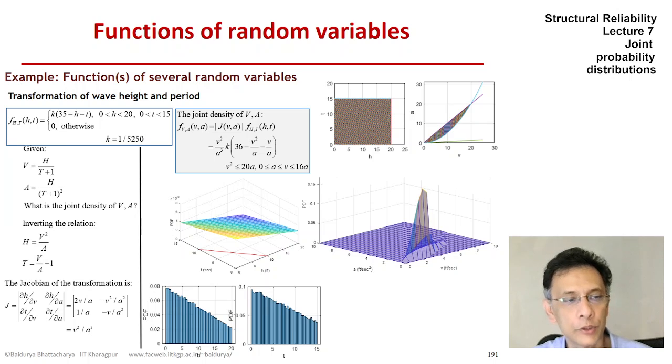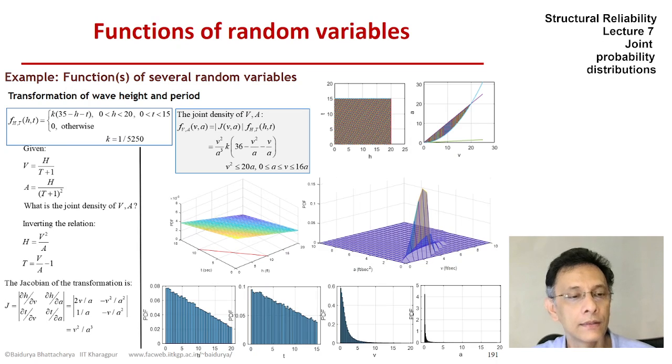And we will look at that when we take our Monte Carlo simulations. Maybe we can come back to this problem. And we can also find the joint density function. From the joint density function of v and a, we can find the marginals, the marginal densities of v and a, and that's what we get.